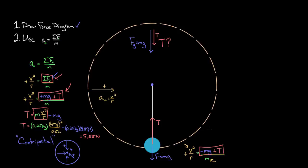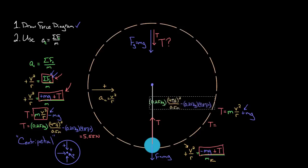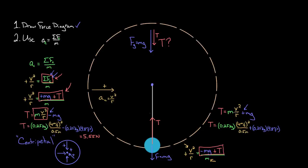Solving for tension at the bottom: multiply both sides by M and add Mg to both sides, giving tension equals mv squared over r plus mg. This time we add mg rather than subtract it. That makes sense conceptually — at the bottom, gravity is not helping the tension but instead pulling the mass away from the center, so tension must exceed the net centripetal force to cancel gravity's negative effect. Plugging in numbers, the tension at the bottom is 10.45 newtons.